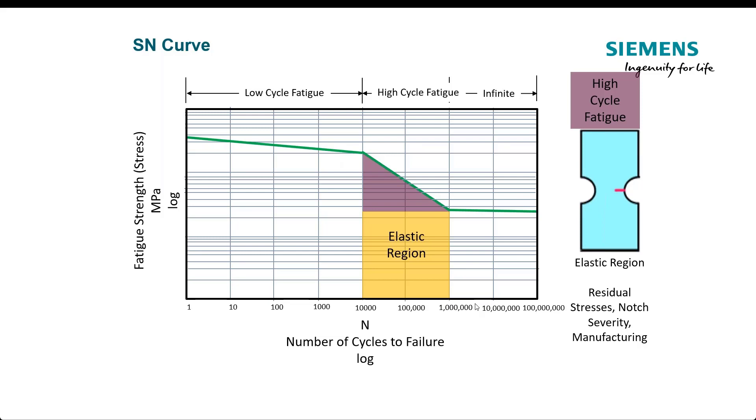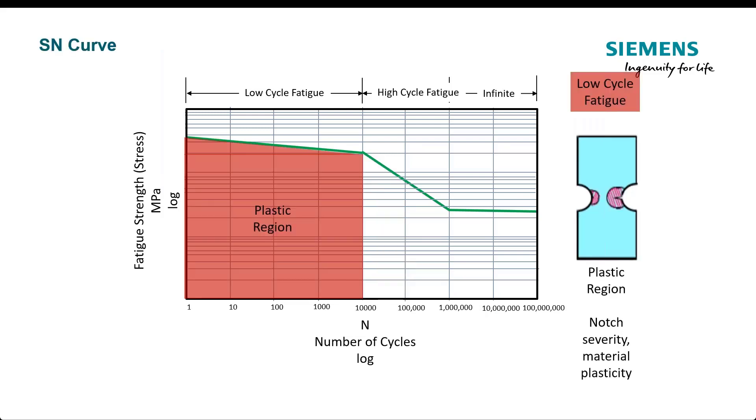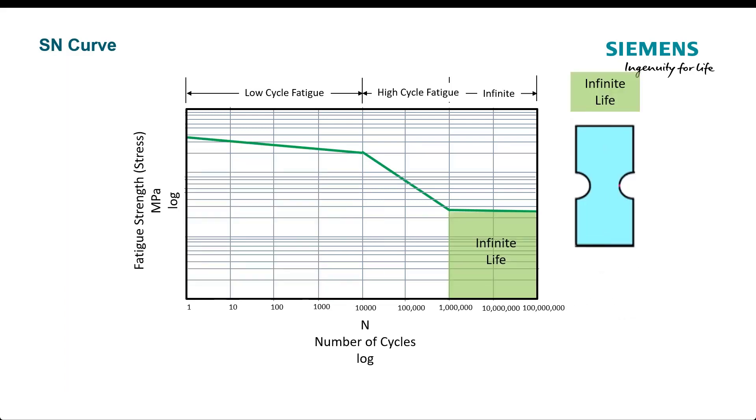Elastic region is where we have a linear relationship between stress and strain, and generally we're going to use something called stress life. The plastic region, even though it looks big, it's still only ten thousand or a thousand cycles. This is where we have a non-linear relationship between stress and strain, and we're going to use something called strain life. We can also use strain life in this region, because it's a combination of the EN curve, it has the SN curve built into it.